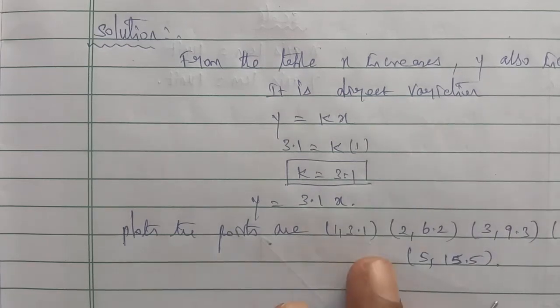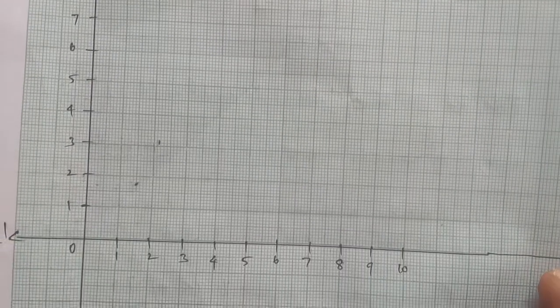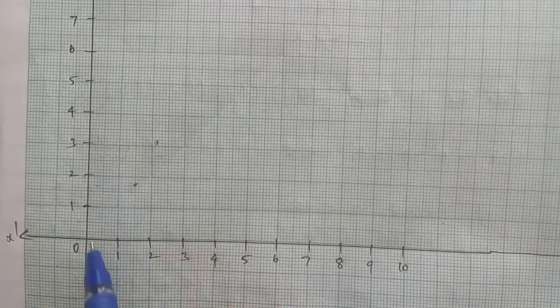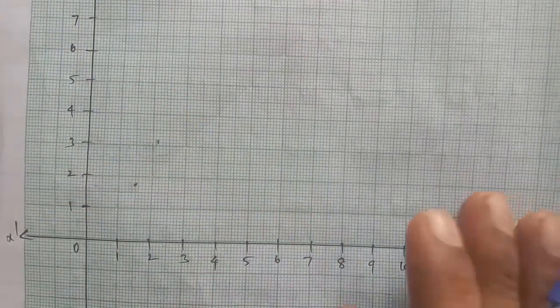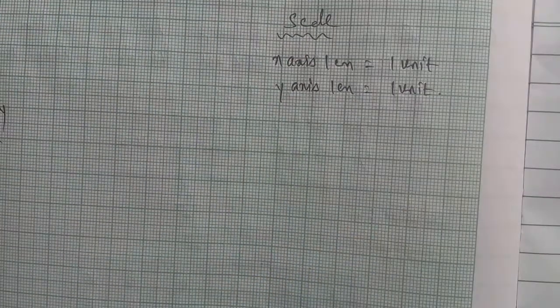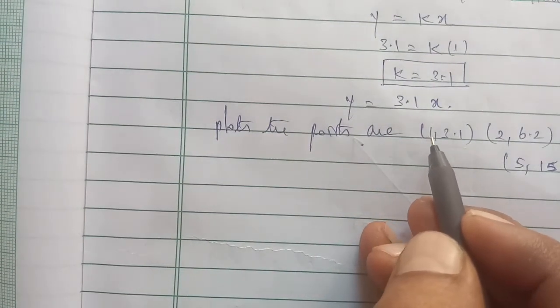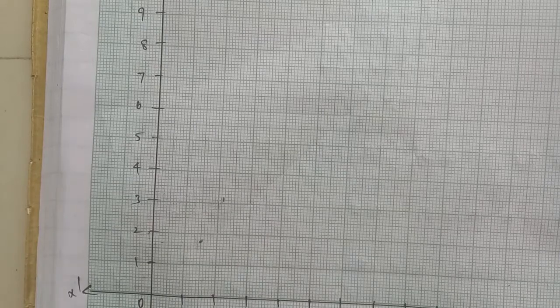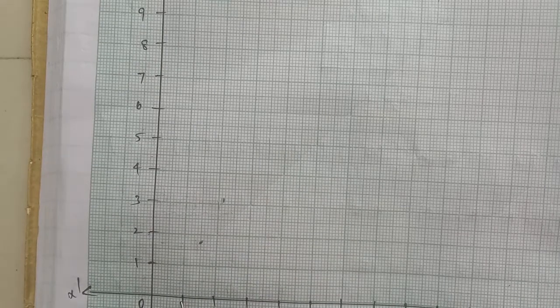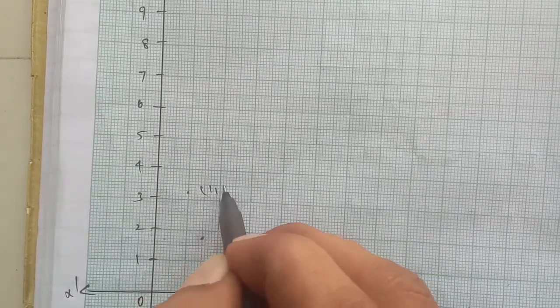Now, if you look at the points, we will plot them on the graph. The first point: x is 1, y is 3.1, so the point is (1, 3.1). The second point: x is 2, y is 6.2, so the point is (2, 6.2).